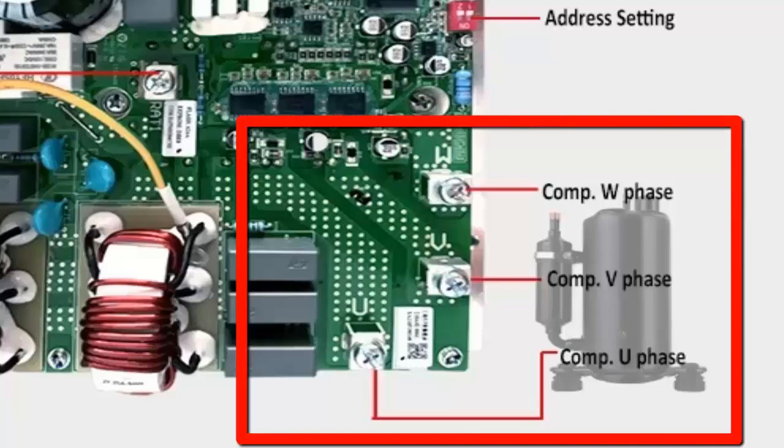Identify the output points UVW. These can be identified by following the tracks from the compressor connectors to the IPM electronic circuit.